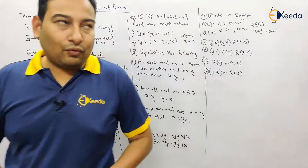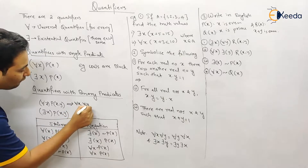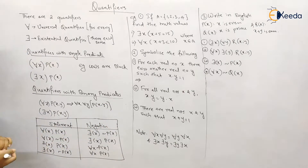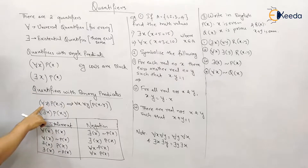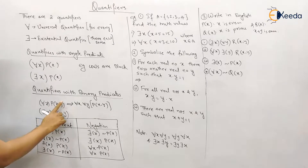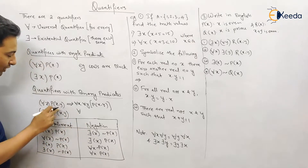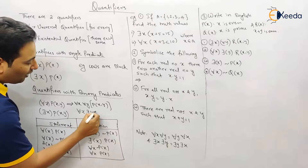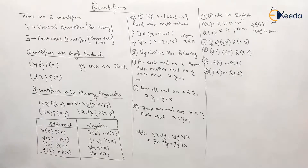The restriction can be on x and y both, or on either one. For example, 'for every x, P(x, y) is true' can also be written as 'for every x, for every y, P(x, y) is true.' It can also be a combination: 'for every x, there exists some y, P(x, y) is true.' The choice depends on the problem.